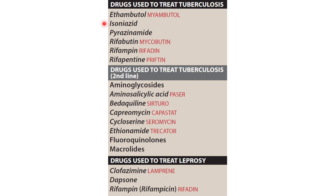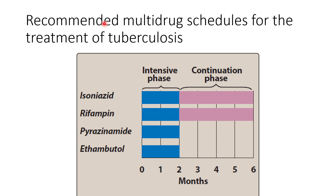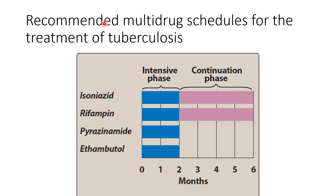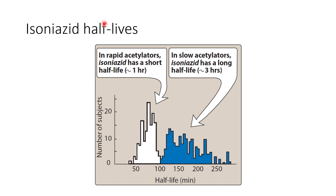Isoniazid can be administered orally, but absorption can be impaired by food, especially high-fat food. It crosses the cerebrospinal fluid and then undergoes acetylation and hydrolysis, resulting in excretion. Depending on the activity of the enzymes, patients are divided into fast acetylators and slow acetylators of isoniazid. Most patients are slow acetylators, and this is regulated genetically. Dose adjustment may be required for rapid acetylators.